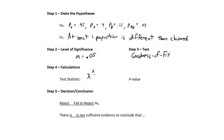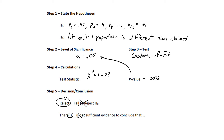Chi-square equals 12.04 and the p-value is 0.0072. That is lower than 0.05, so we reject the null hypothesis. There is sufficient evidence to conclude that H1 is true — namely, that at least one proportion is different than claimed.